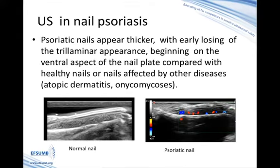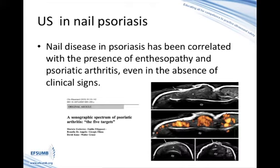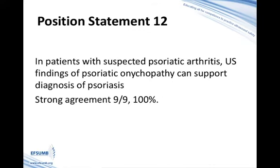In respect of nail psoriasis, psoriatic nails appear thicker with early loosening of the trilaminar appearance, beginning on the ventral aspect of the nail plate, compared with healthy nails or nails affected by other diseases like atopic dermatitis or onychomycosis. Nail disease in psoriasis has also been correlated with the presence of enthesopathy and psoriatic arthritis, even in the absence of clinical signs. In summary, in patients with suspected psoriatic arthritis, ultrasound findings of psoriatic onychopathy can support diagnosis of psoriasis. There was unanimous agreement — 9 of 9.